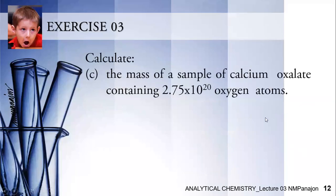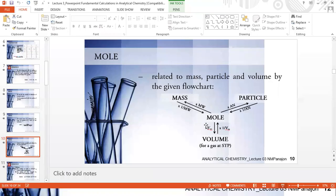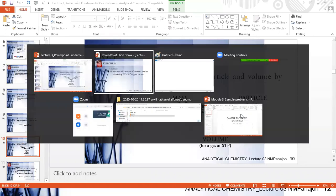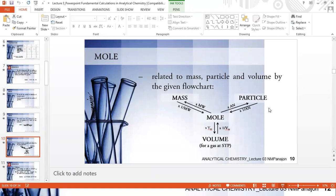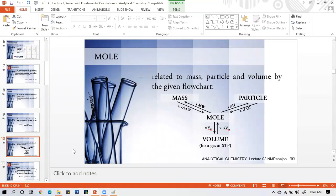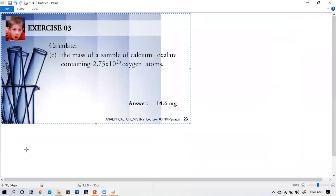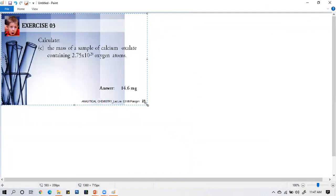For letter C: Calculate the mass of a sample of calcium oxalate containing 2.75 times 10 to the 20 oxygen atoms. How do we calculate this? It's atoms to mass. In our mole concept, this problem is particle to mass. It's particles, so we go through three steps: particle, mole, and mass. How do we calculate that? We'll use this approach. Let me apply it here.